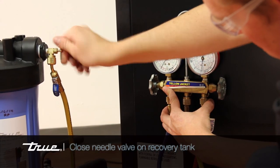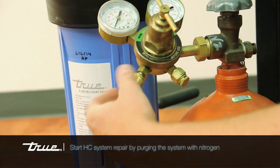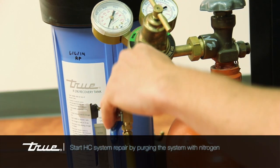Close the needle valve on the recovery tank and remove the hose from the recovery tank. You will then start HC system repair by purging the system with nitrogen.